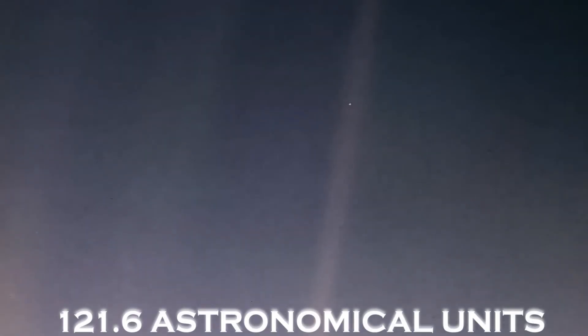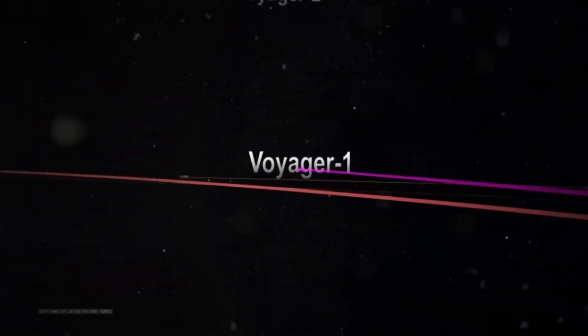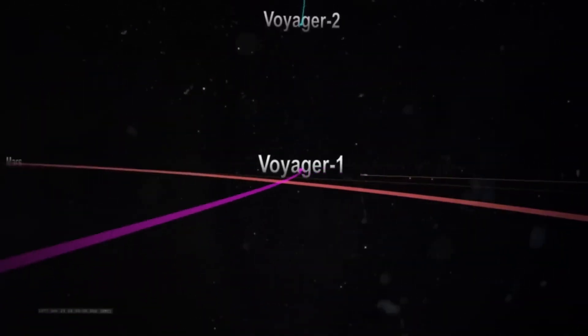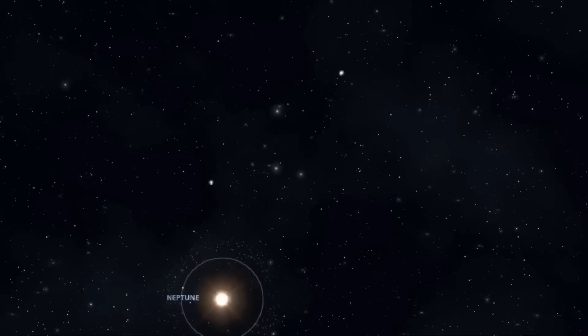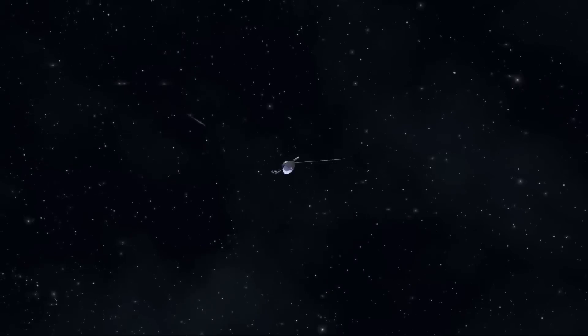On August 25, 2012, at a distance of 125.6 astronomical units, Voyager 1 crossed the heliopause. There were clear signs that it had crossed this boundary, such as the disappearance of high-energy particles from the solar wind, indicating that the rest of the solar wind had also been left behind.